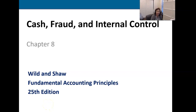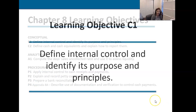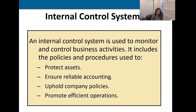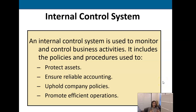Welcome to chapter eight. In this chapter we will talk about cash fraud and internal control, and really what this all leads to is how we protect our most liquid asset, which is our cash. The central point to protecting our cash resources is through what's called internal control, which not only protects our assets but ensures that our financial reporting is reliable, upholds company policies, and promotes efficient operations.